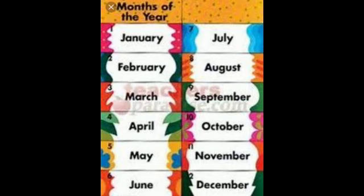30 days have September, April, June and November. All the rest have 31, except February only, which has 28 days and 29 in a leap year.